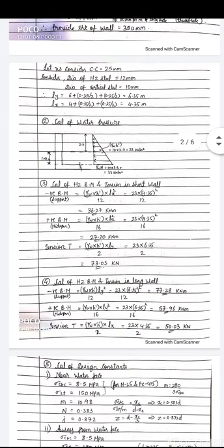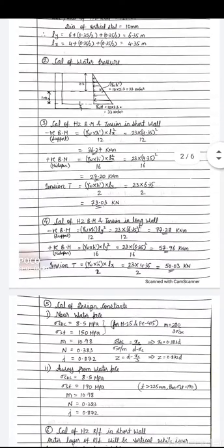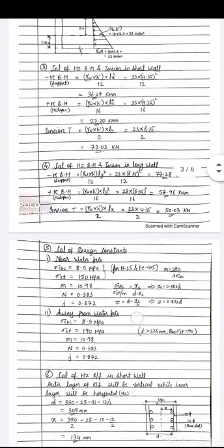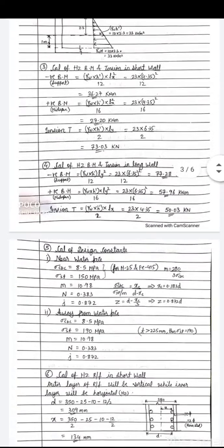Step four — bending moment and tension in the long wall uses the same formula, but with ly² in place of lx², giving BM at support = 77.28 kN·m and BM at mid-span = 57 kN·m, with tension T = 50 kN.